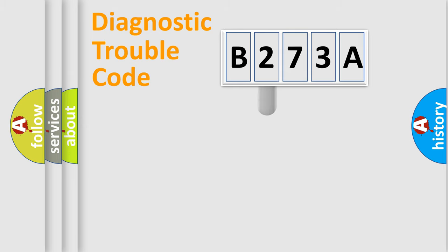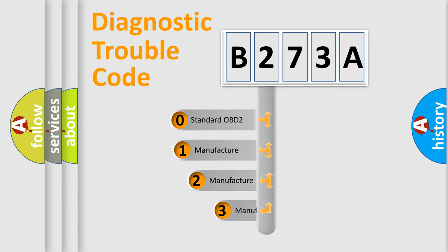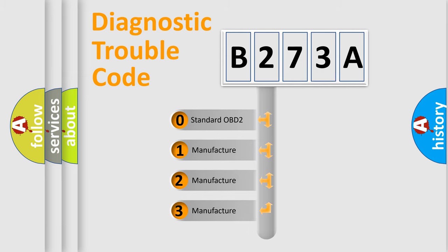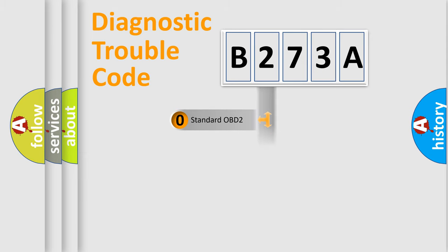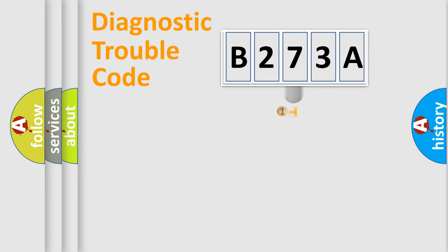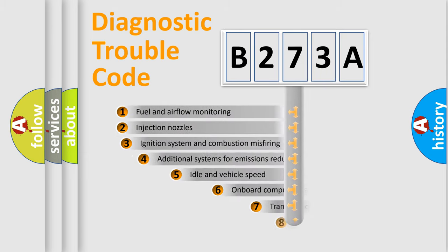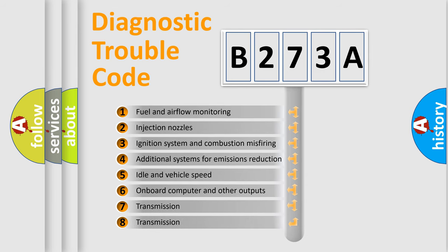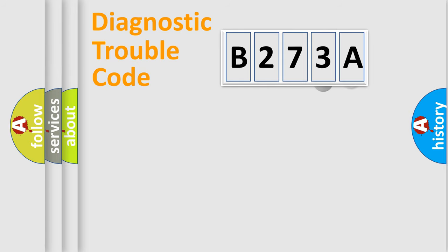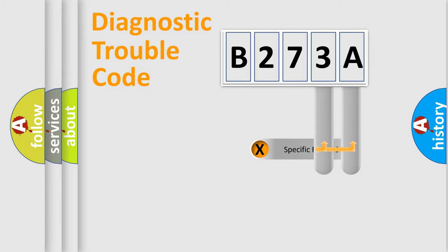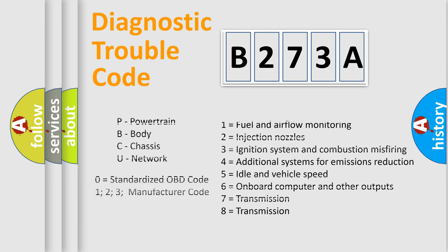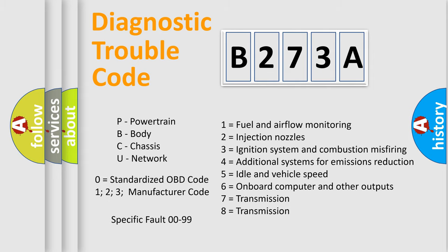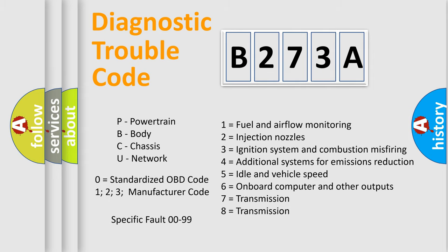This distribution is defined in the first character of the code. If the second character is expressed as zero, it is a standardized error. In the case of numbers 1, 2, or 3, it is a more specific expression of a car-specific error. The third character specifies a subset of errors. The distribution shown is valid only for the standardized DTC code, and only the last two characters define the specific fault of the group. Such a division is valid only if the second character is expressed by the number zero.